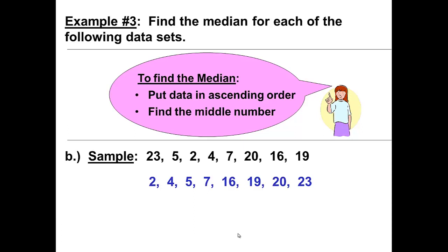Next we can mark off from both ends looking for the middle number. As we do so, notice there is not a single number in the middle. Therefore we take the two in the middle where they meet and we have 7 and 16, and the median will be halfway between the 7 and the 16.